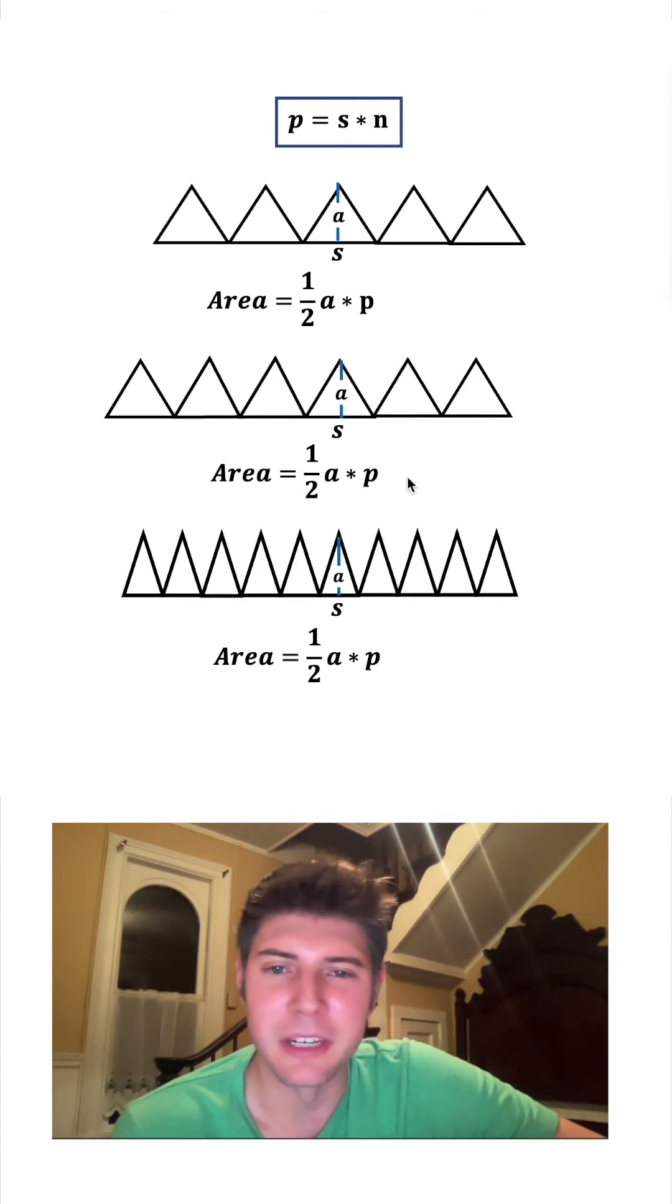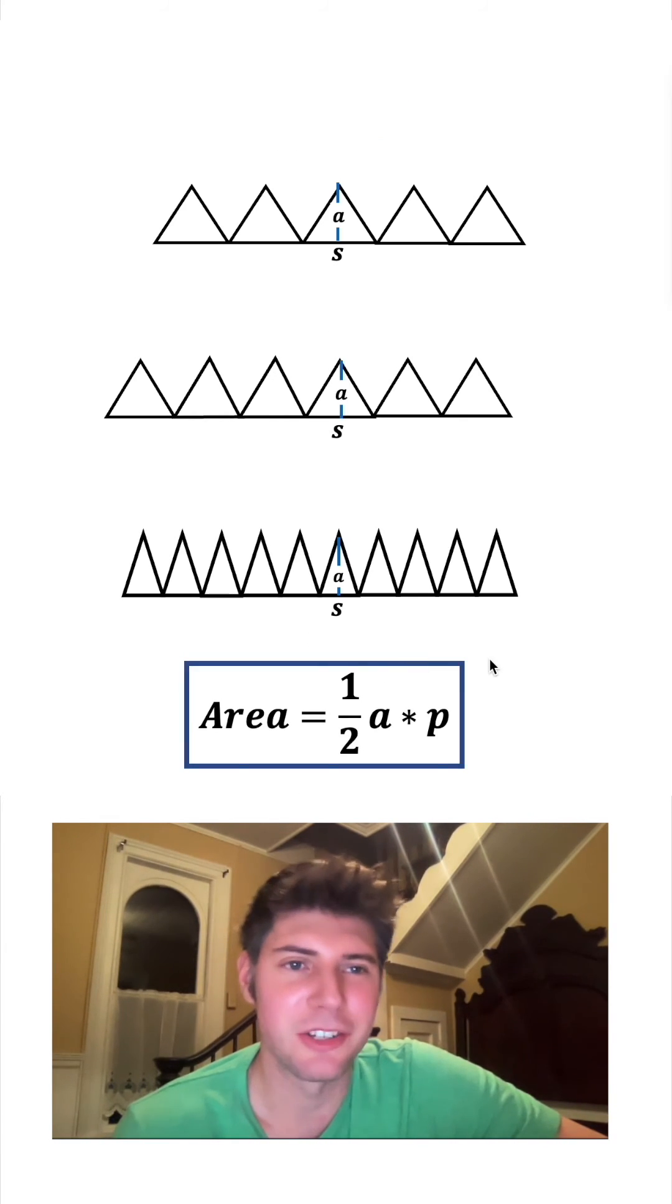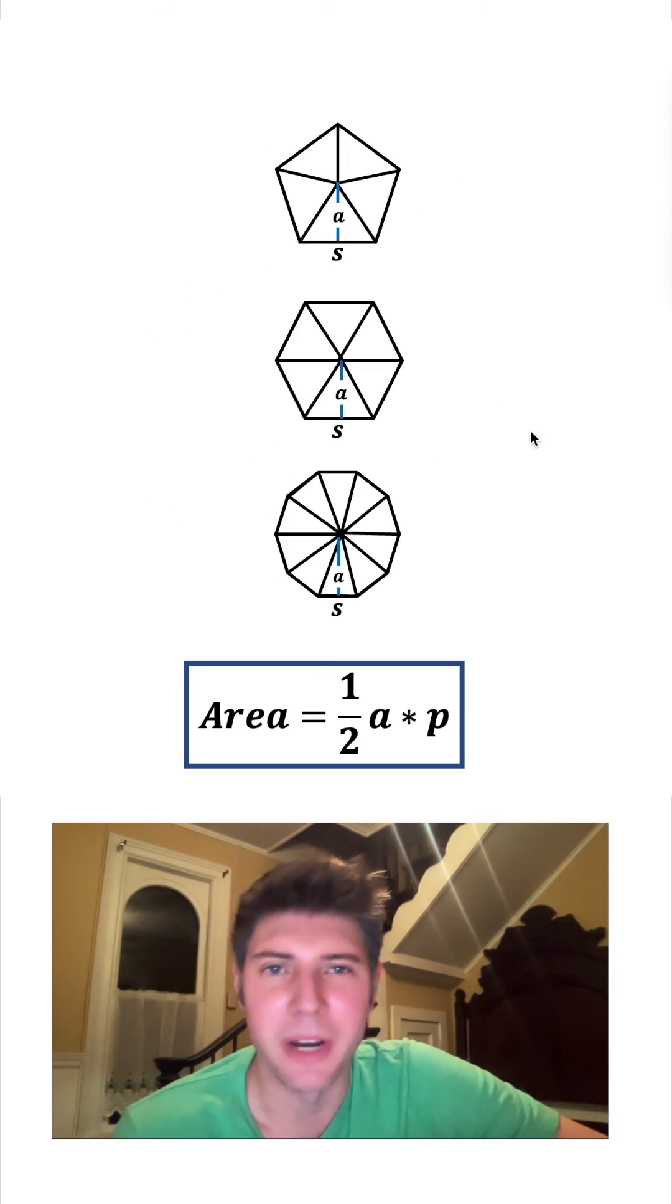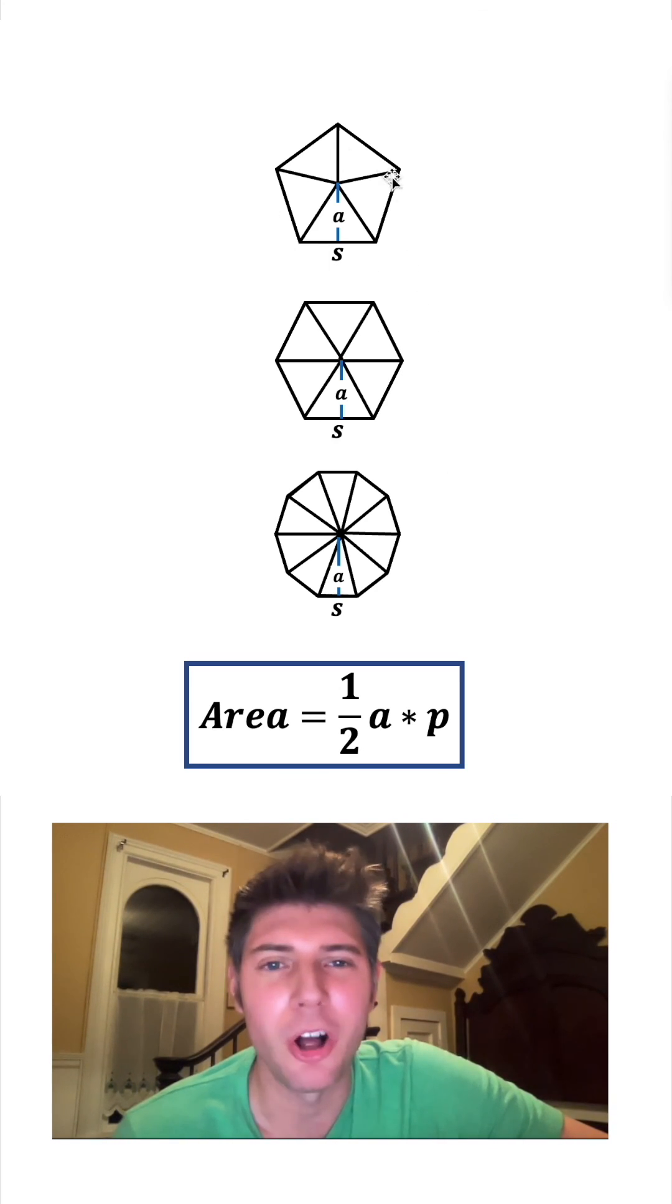Now all three of them are the same formula. We can get rid of these two. We don't really need this anymore either. Let's make it larger and put a box around it. This is the formula for any one of these, and as we bring them back together, we get our original regular figures. And this is a visual demonstration of why the area of a regular polygon is one half the apothem times the perimeter.